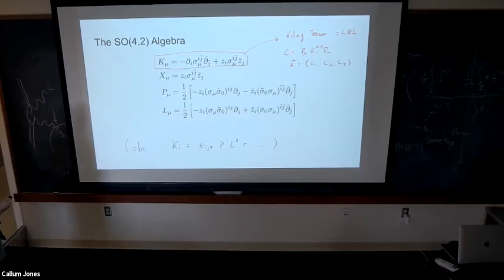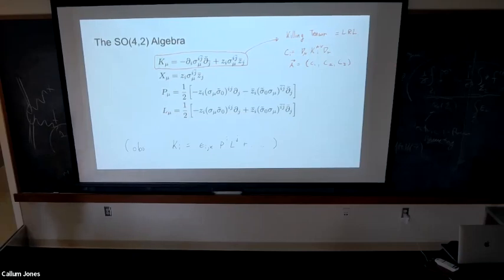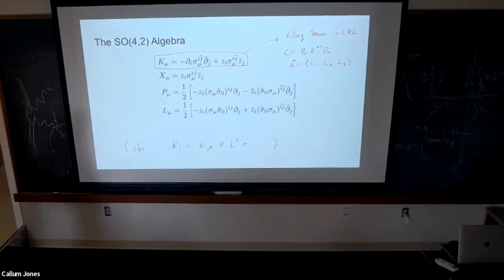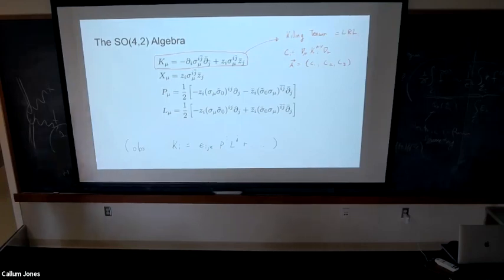The relation between K and P and L gives: K is essentially P cross L, which is the Laplace-Runge-Lenz identity. One of the C constants is the Carter constant, but this is a triplet of C's that happens at the self-dual point. Essentially, as you go away from the self-dual point toward Kerr, only C3 will survive and it will become the Carter constant.